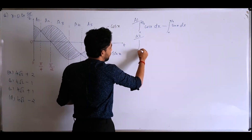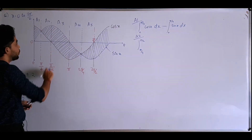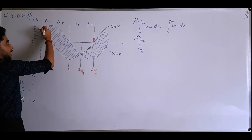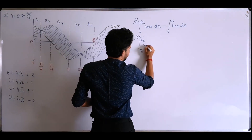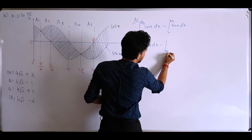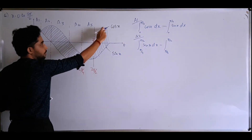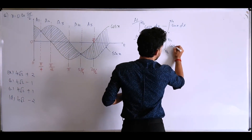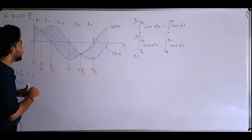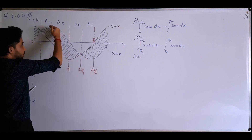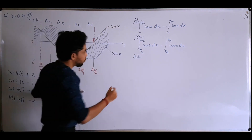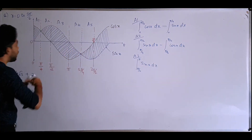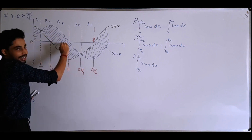For A2, the integral is from π/4 to π/2: ∫ sin x dx minus ∫ cos x dx over the same interval. For A3, I first find the area under the sin x curve from π/2 to π: ∫_{π/2}^{π} sin x dx, which gives this entire region.